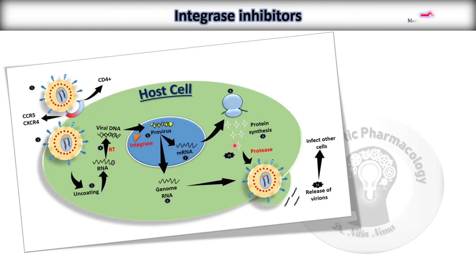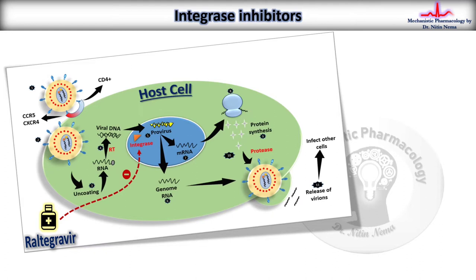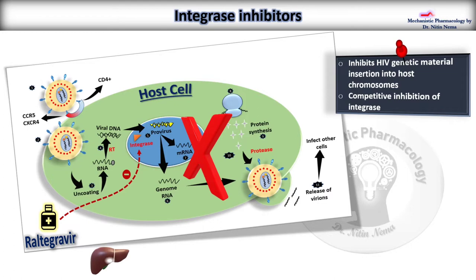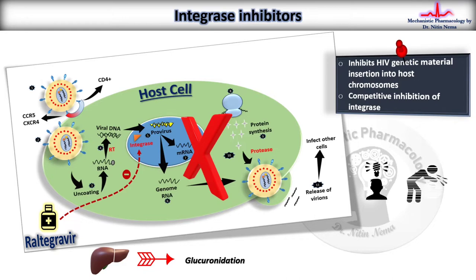Drugs belonging to the integrase inhibitor category include raltegravir. This drug inhibits the viral enzyme integrase in a competitive manner, preventing insertion of genetic material into host chromosomes, thereby diminishing further replication. It is metabolized via the liver through glucuronidation. Fewer side effects include headache, vomiting, diarrhea, along with some abnormal dreams or depression.